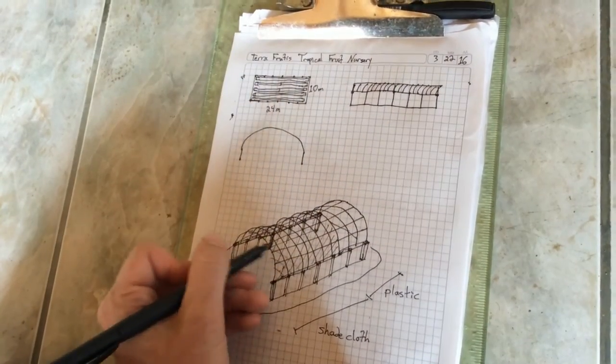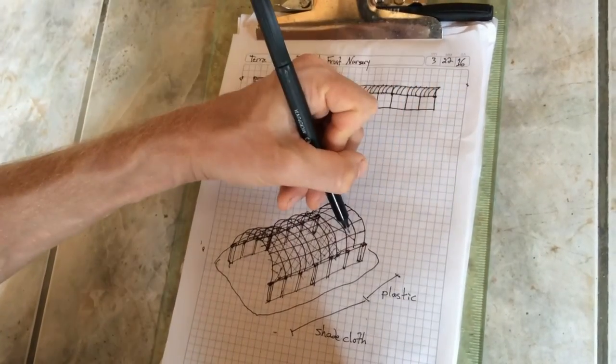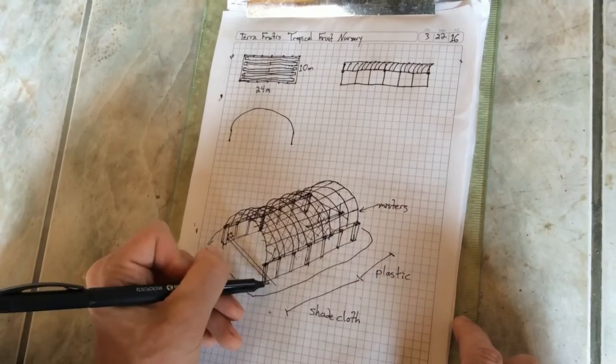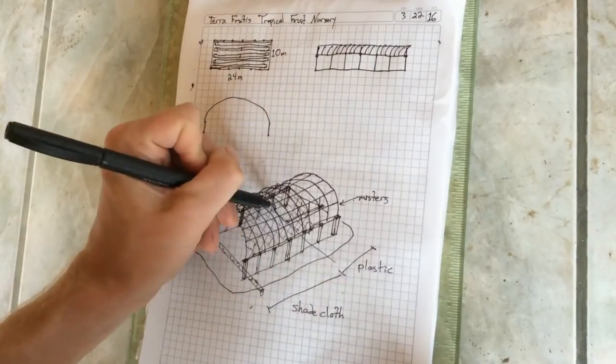The back third is going to be greenhouse plastic for dry loving plants like dates and cactuses. And the front two thirds is going to be shade cloth so that we don't have to water all of those plants that don't need it dry.